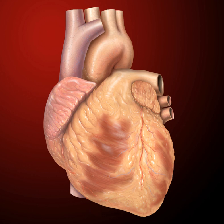The tricuspid valve has three cusps, which connect to chordae tendini and three papillary muscles named the anterior, posterior, and septal muscles, after their relative positions.